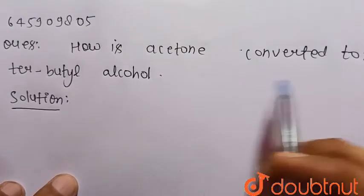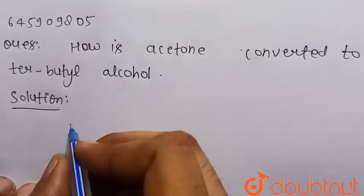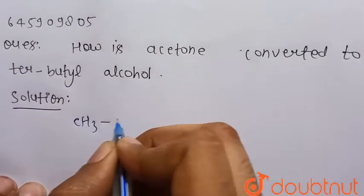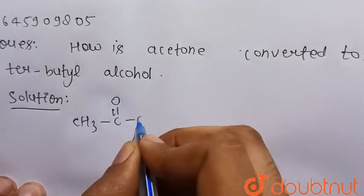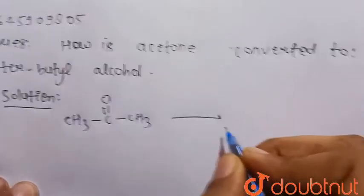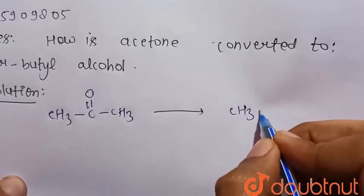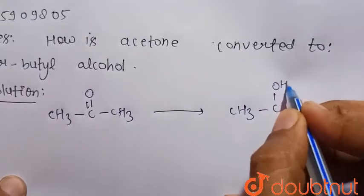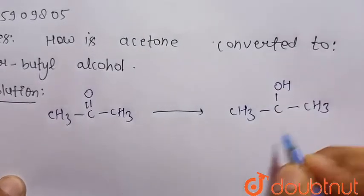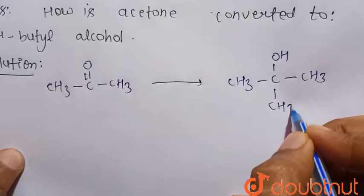How is acetone converted to tertiary butyl alcohol? We know that acetone is CH3-C=O-CH3, and tertiary butyl alcohol is CH3-C(OH)(CH3)-CH3.